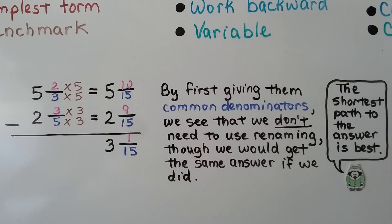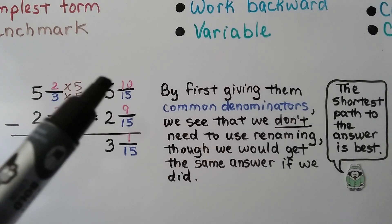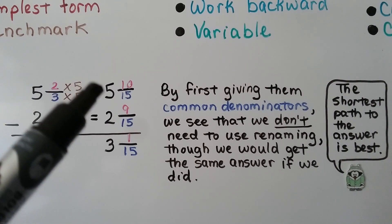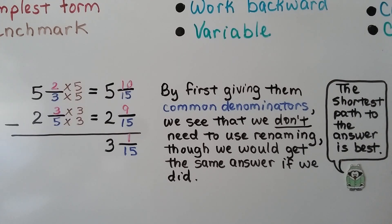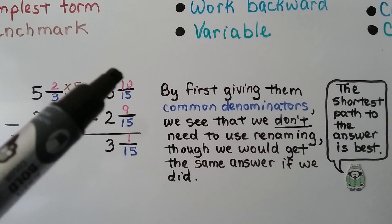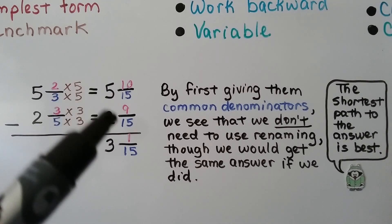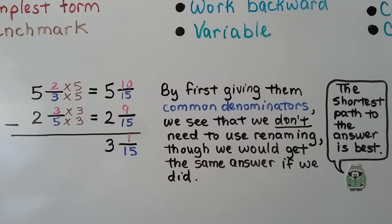Why do extra math if you don't need to? We could have changed these both to fractions greater than 1, or renamed this to 4 and 25 fifteenths, but we didn't need to because the numerator from the minuend was great enough to subtract the numerator from the subtrahend.